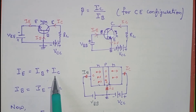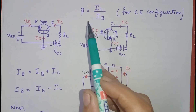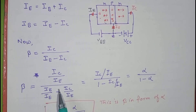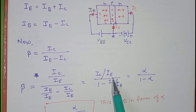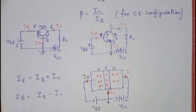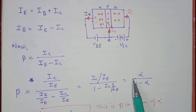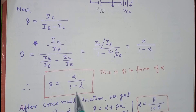After manipulating the equation IE = IB + IC, we get IB equals IE minus IC. Substituting this into beta = IC/IB, beta becomes IC upon IE minus IC. Dividing numerator and denominator by IE, the equation becomes (IC/IE) upon (1 minus IC/IE). Since IC upon IE equals alpha, beta equals alpha upon 1 minus alpha.